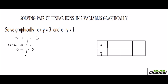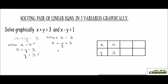When x equals 0, you get 0 plus y equals 3, so y is 3. When x equals 2, you get 2 plus y equals 3, so y would be 1 — that is 3 minus 2 which is 1.